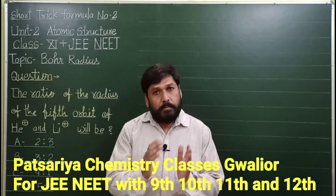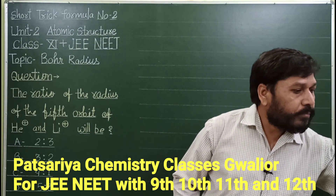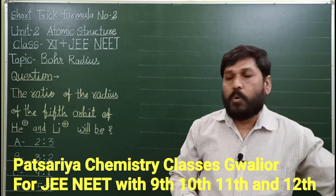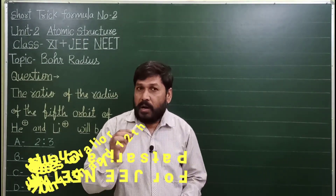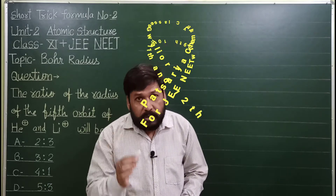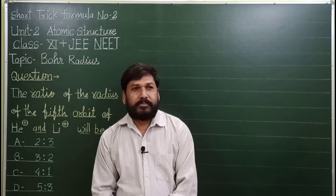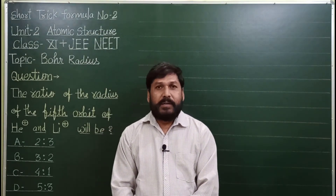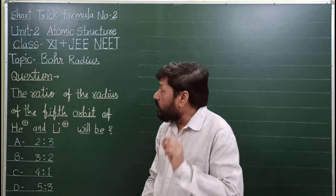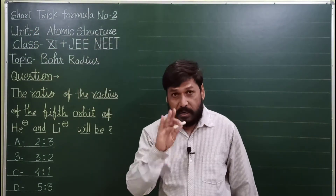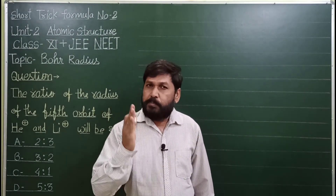So let's start without delay. In today's lecture, I will start the series of Super 100 Short Tricks of Complete Chemistry. In the short trick formula, I will teach you the second formula, which is Unit 2 — physical chemistry of atomic structure, class 11th.